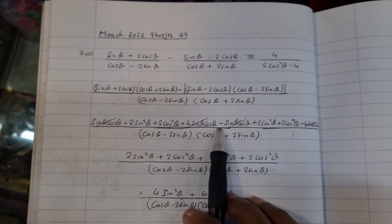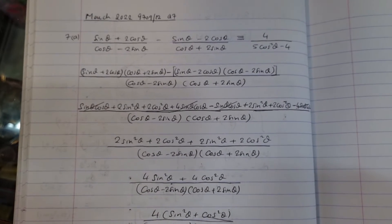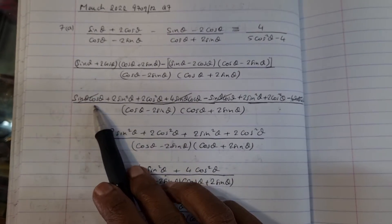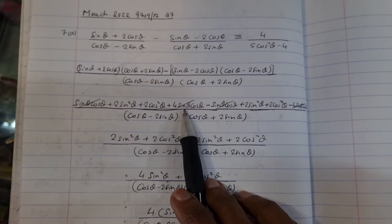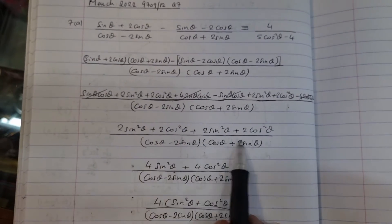So you expand, and you come up to all that algebraic expression. And from here, if you further simplify, sin θ cos θ minus sin θ cos θ plus 4 sin θ cos θ minus 4 sin θ cos θ, all of that's going to disappear, and you're left with this.